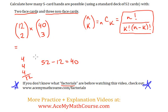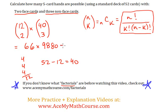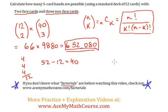I'll plug that into my calculator, because my calculator has that function and yours probably also does. But I will also show you how to do it algebraically with the formula. So, 12 combination 2 works out to be 66, and 40 combination 3 works out to be 9,880. Once we multiply that, we get a whopping 652,080 five-card hands that are possible with two face cards and three non-face cards.